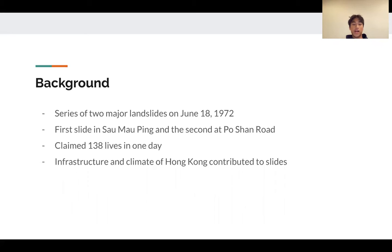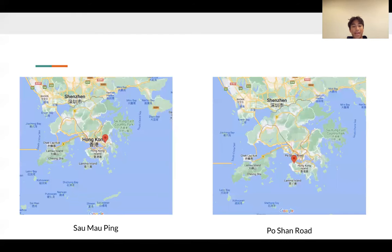Many factors led to the high death tolls of the 1972 landslides, which included erosion, above average rainfalls, and poor city construction efforts. Here on the map, to the left is the location of Sao Ma Ping and to the right is the location of Po Shan Road.